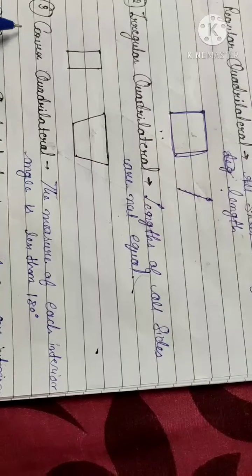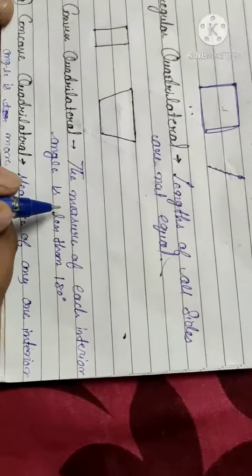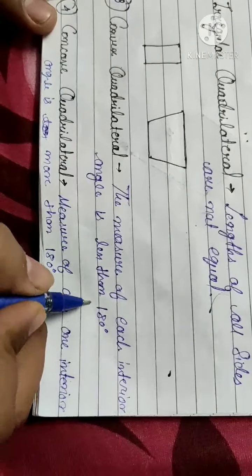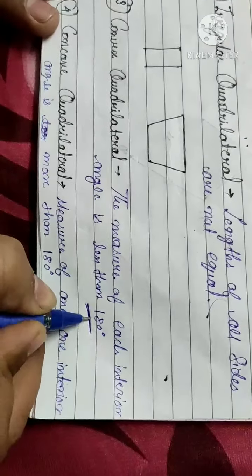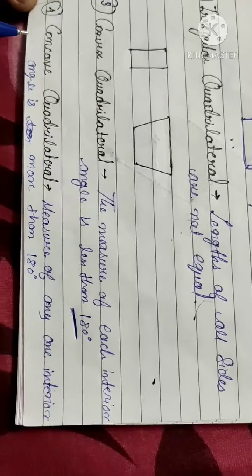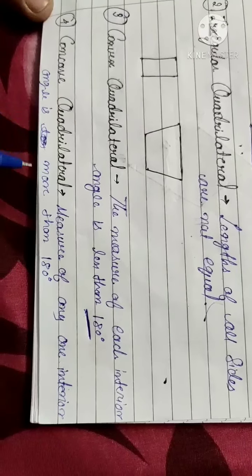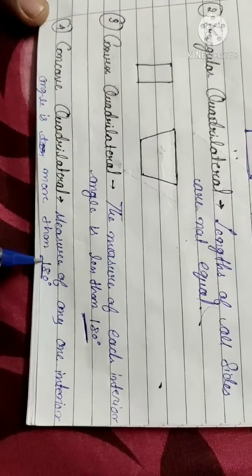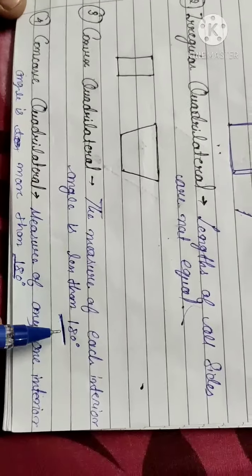A convex quadrilateral is one where the measure of each interior angle is less than 180 degrees. A concave quadrilateral is one where the measure of any one interior angle is more than 180 degrees. So convex means less than 180 degrees, and concave means more than 180 degrees.